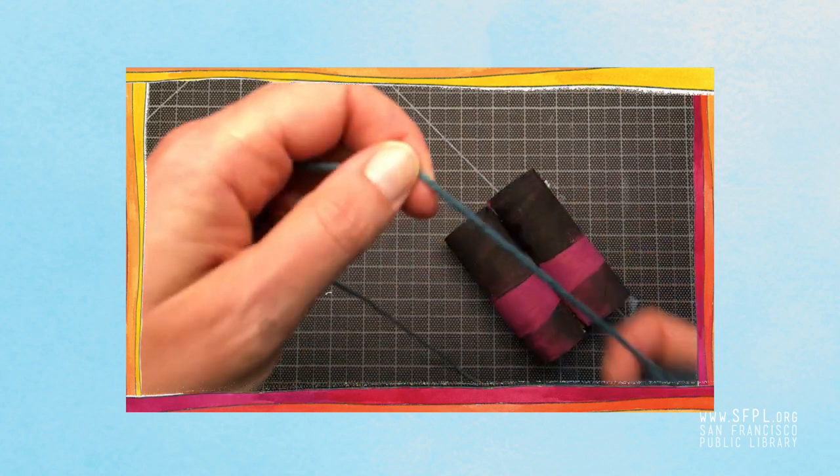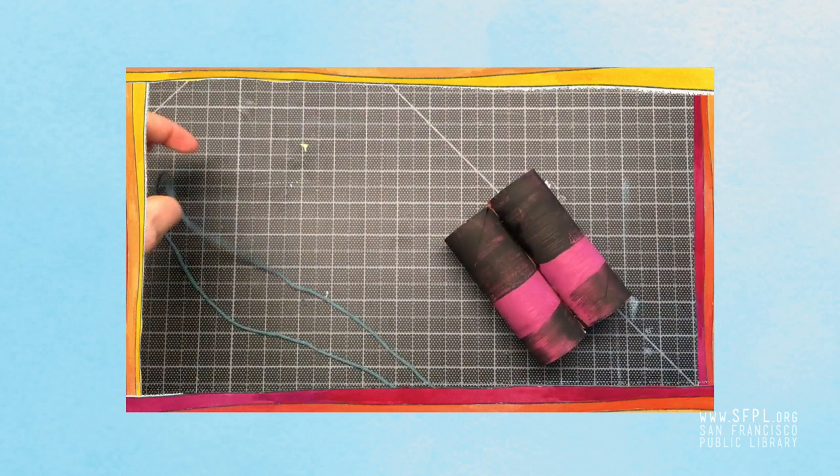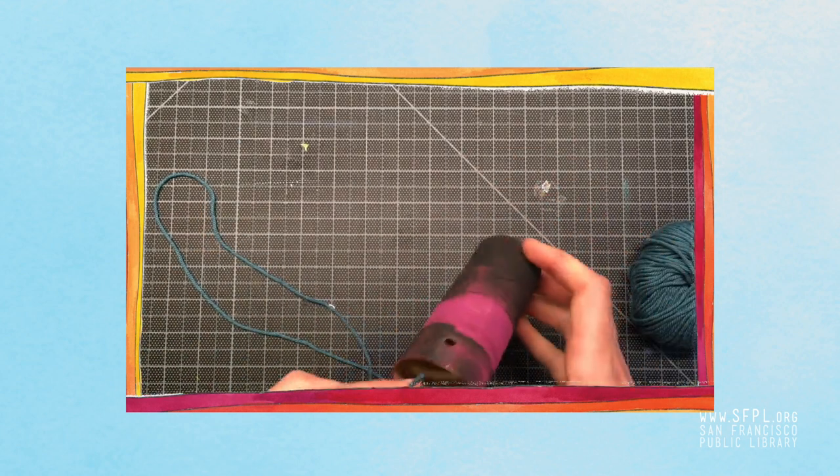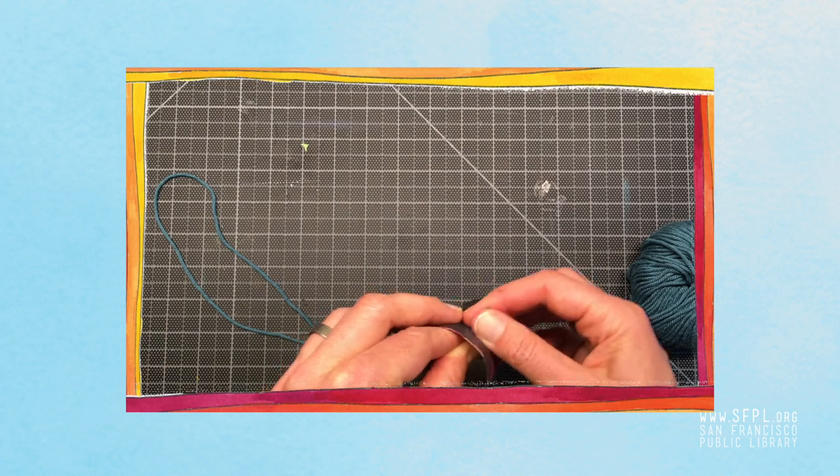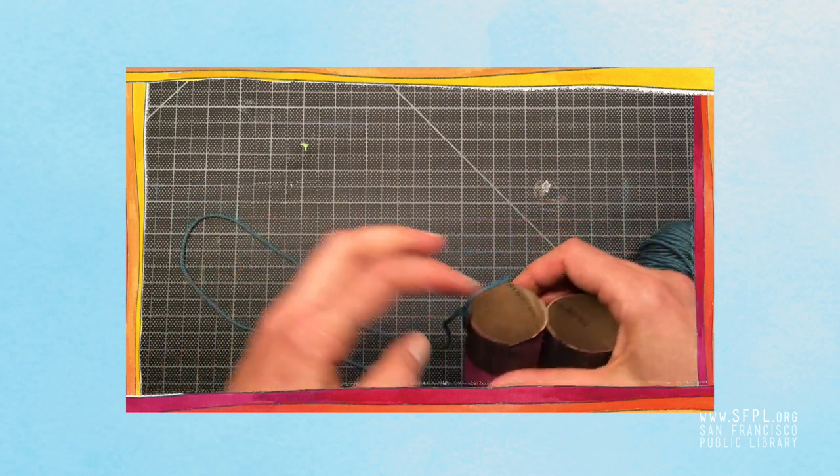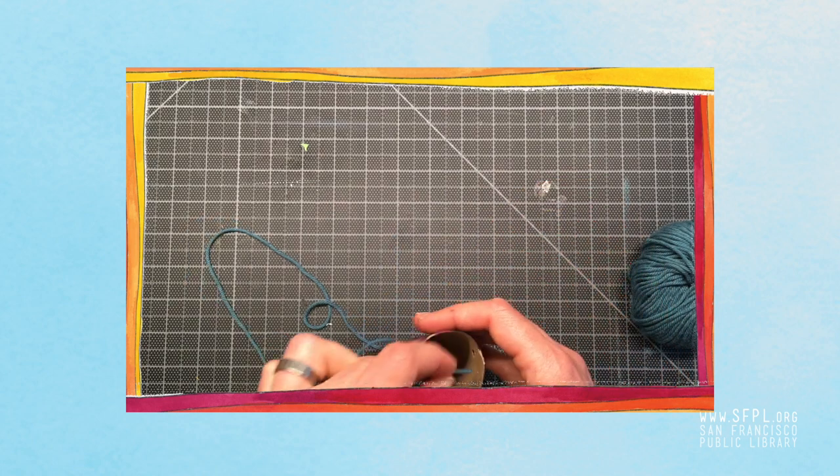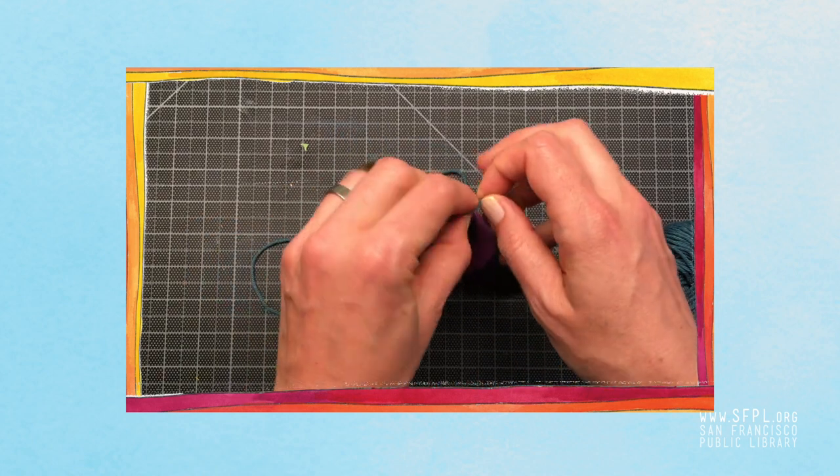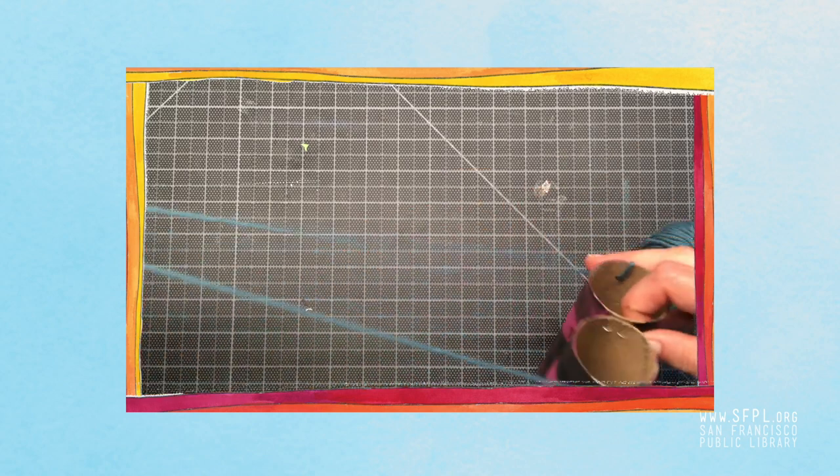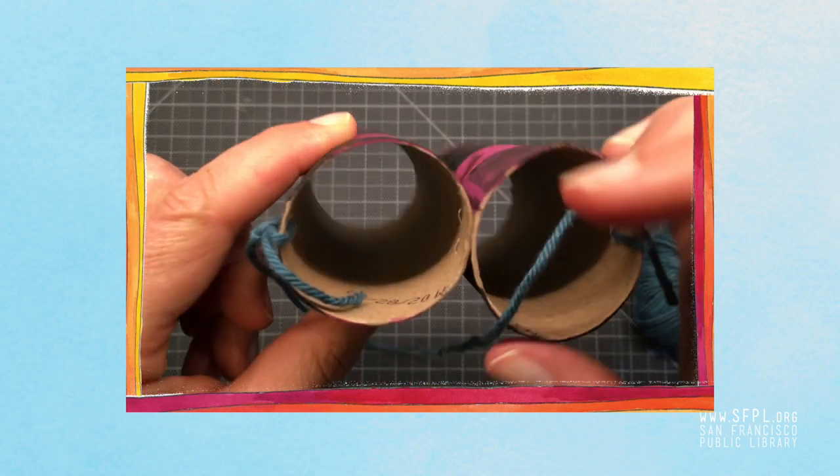Then I measure out the string and thread it through the holes. Tie a knot and here they are, my finished binoculars.